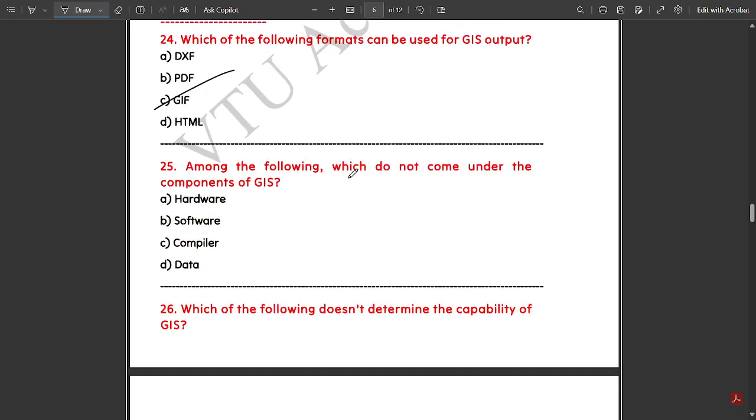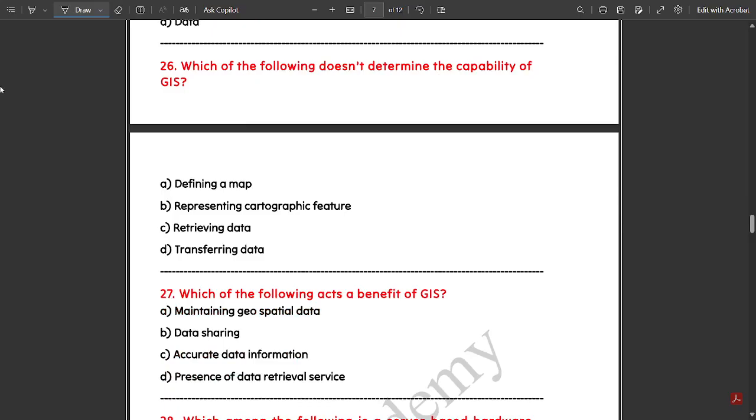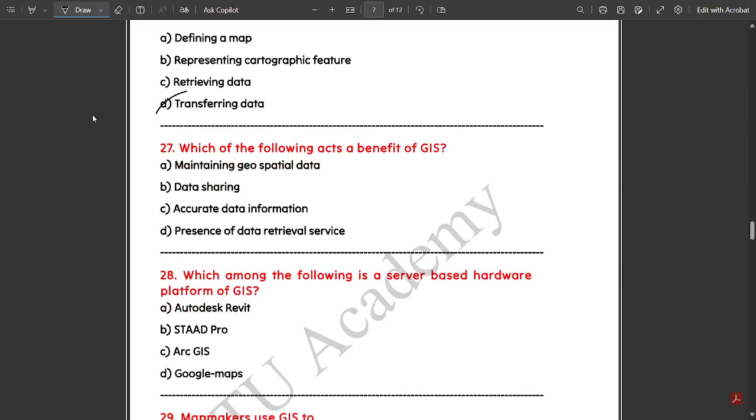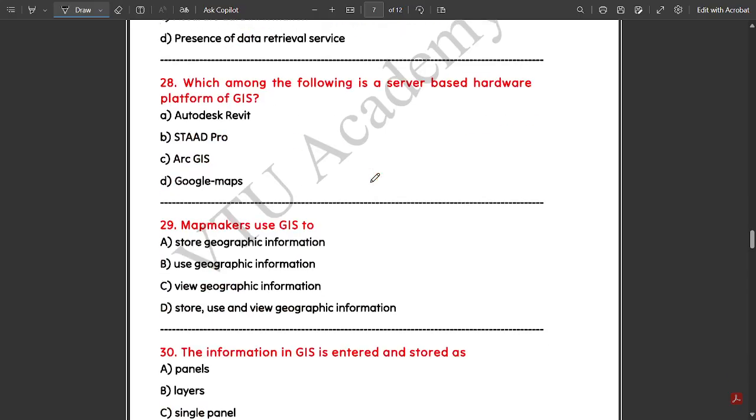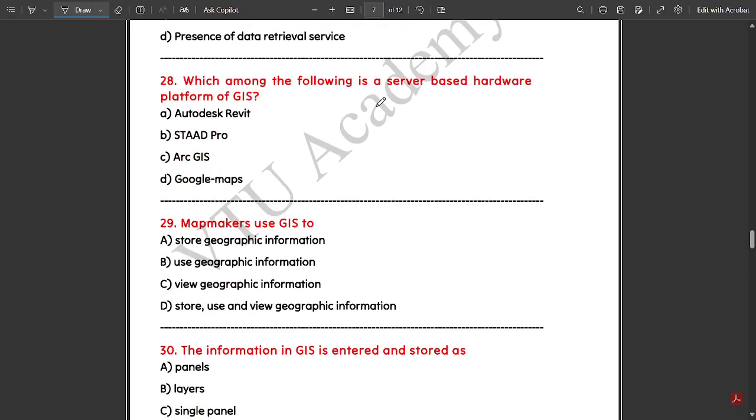Among the following, which do not come under the components of GIS? Compiler. Which of the following doesn't determine the capability of GIS? Transferring data. Which of the following acts as a benefit of GIS? Maintaining geospatial data. Which is a server-based hardware platform of GIS? Google Maps.